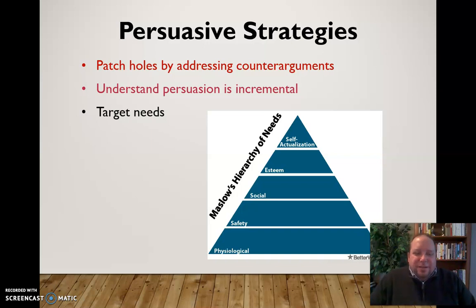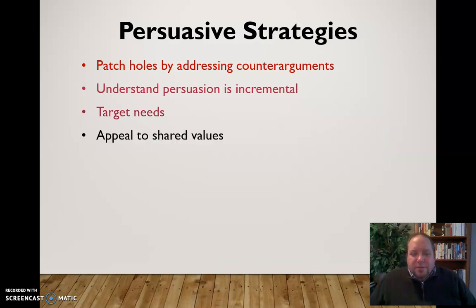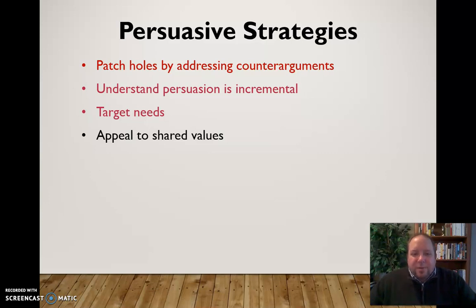We can also target needs as a persuasive strategy. Understanding Maslow's hierarchy of needs — is this going to hit people at a psychological level, a safety level, or a social level? We can hone in on what need this is going to fulfill for the audience. We can also appeal to shared values — politicians do this a lot, trying to convince the audience 'I'm one of you.' We can explain how what we're persuading them about really fits in with their life already.